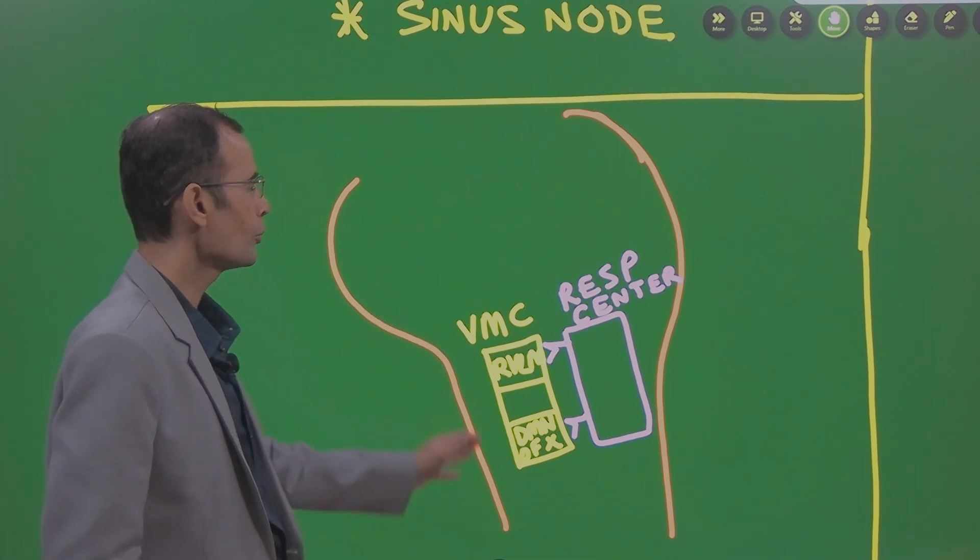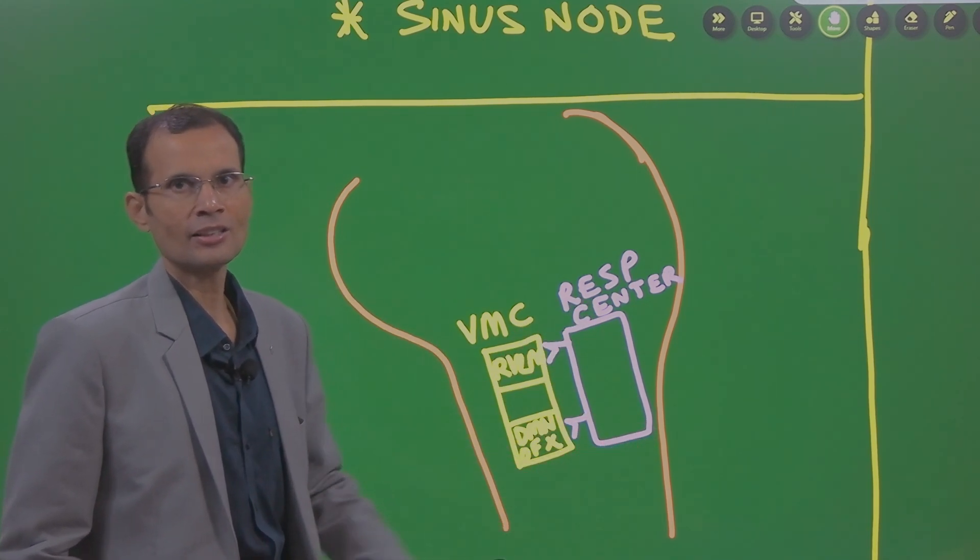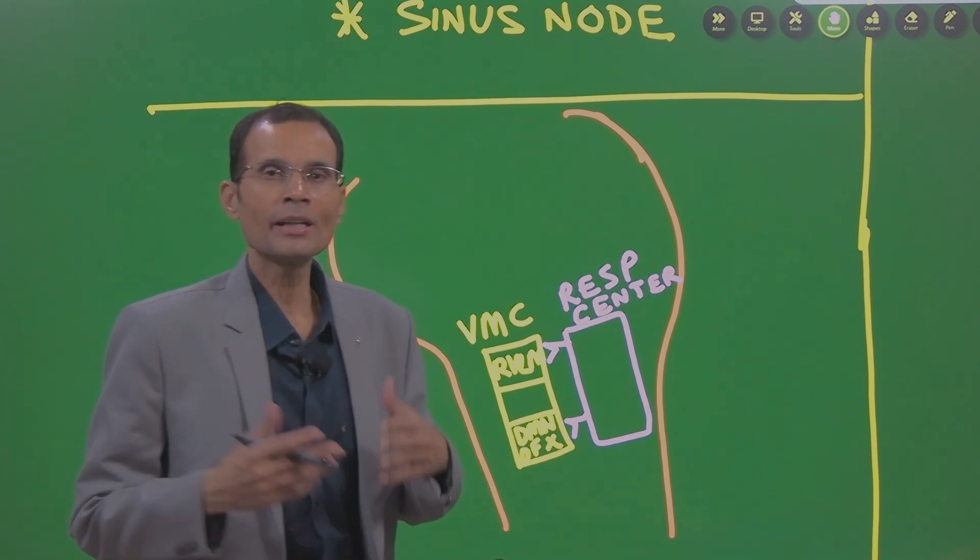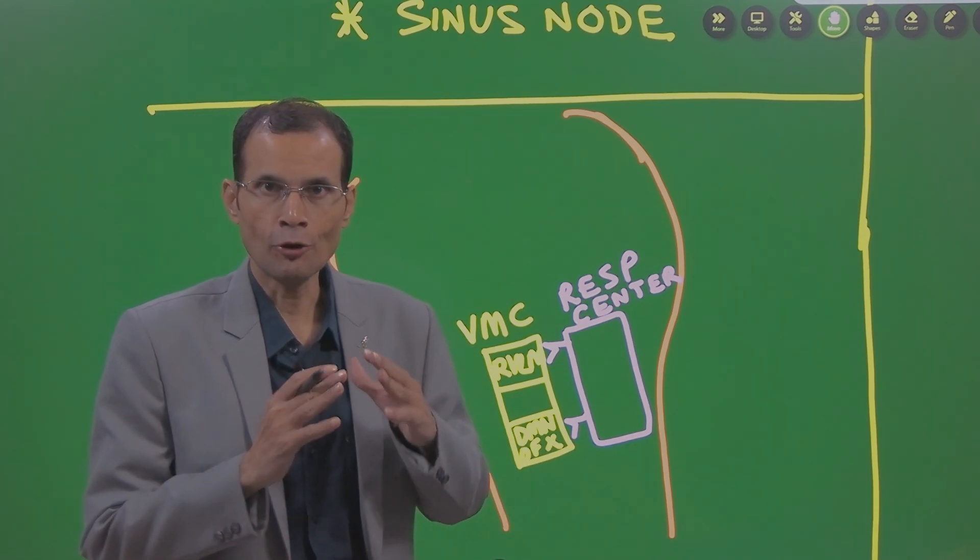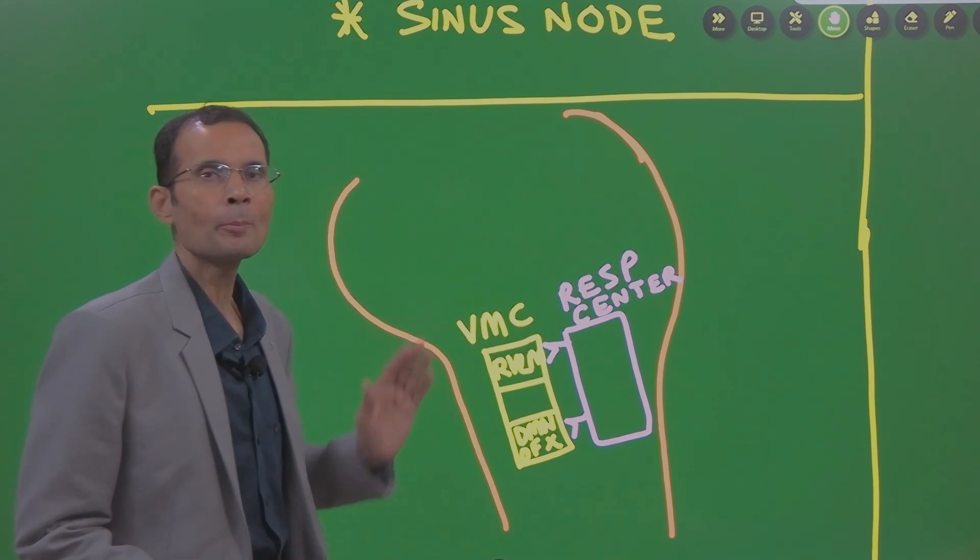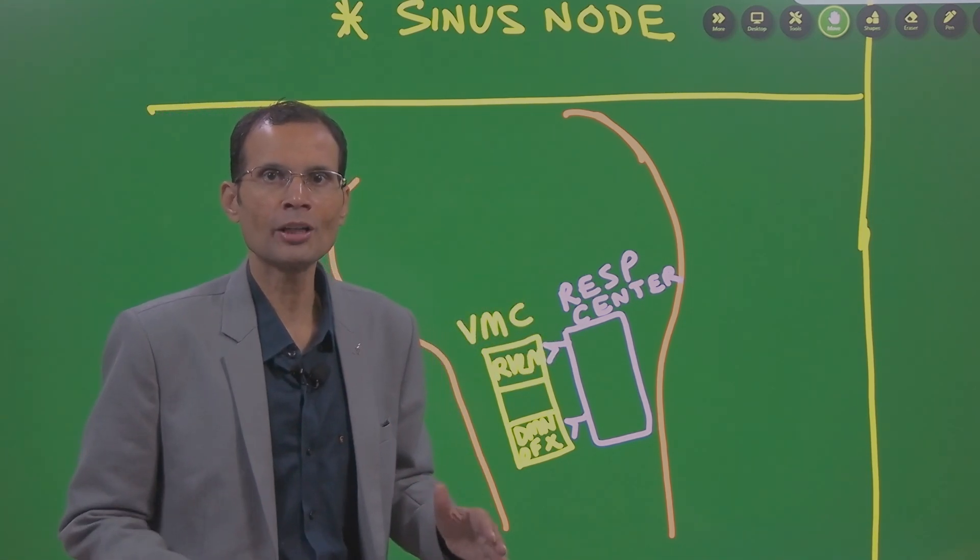Medulla has got vasomotor center as well as respiratory center. And as the respiratory center is generating the impulses for breathing, there would be spillover of impulses. That is what has been postulated.